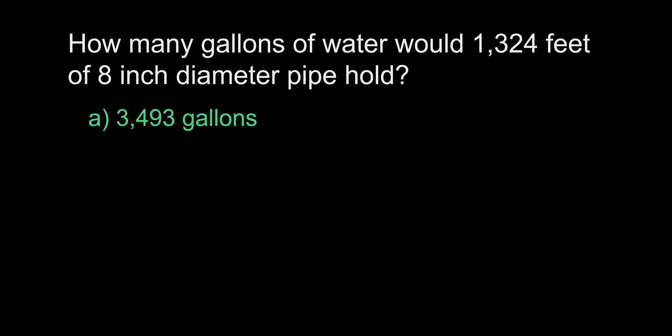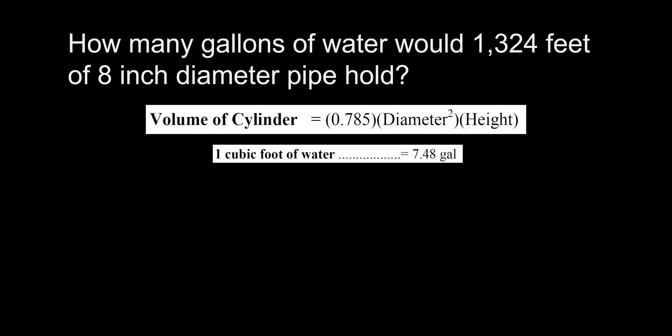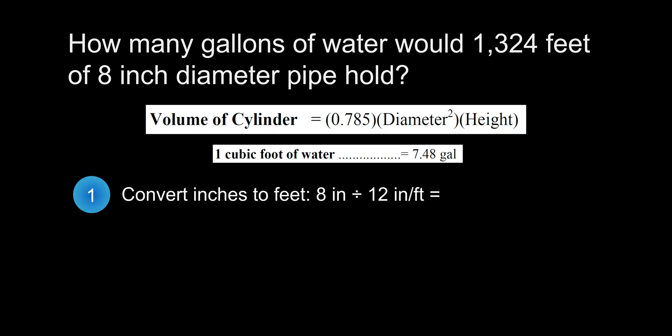The answer is A, 3,493 gallons. To solve for this, we will be using the volume of a cylinder equation and the cubic feet to water conversion. In the first step, we will convert the diameter of the pipe from inches to feet. We solve this by taking the diameter, 8 inches, and dividing it by 12 inches per foot, equaling 0.67 feet.